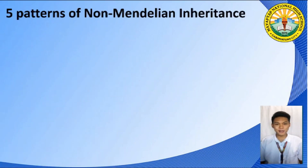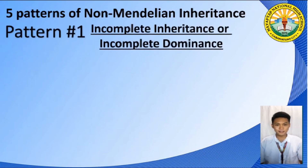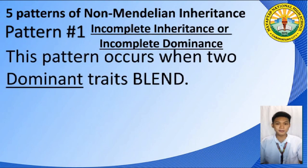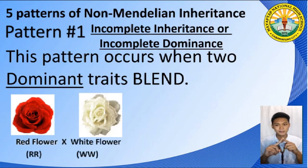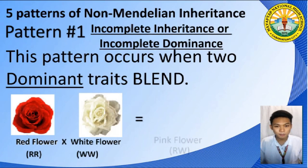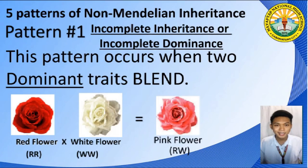Let us now discuss the five patterns of non-Mendelian inheritance. Pattern number one is called Incomplete Inheritance. This pattern occurs when two dominant traits are blended. For example, in flowers, their petals have two dominant colors — red and white. Red and white cannot both be shown in a single petal, so the tendency is for these two colors to blend. If a red flower is blended with a white flower, you will have an offspring of a pink flower, and that is called Incomplete Inheritance.